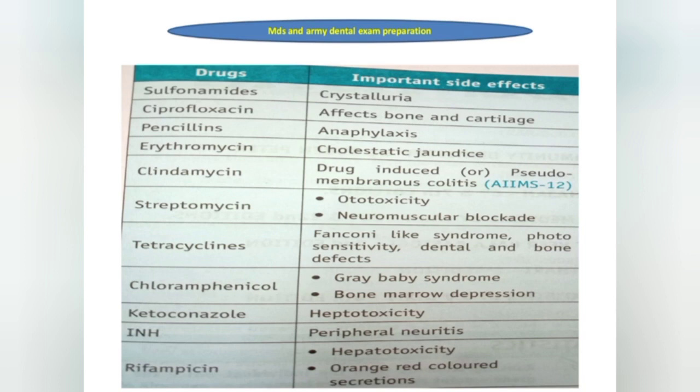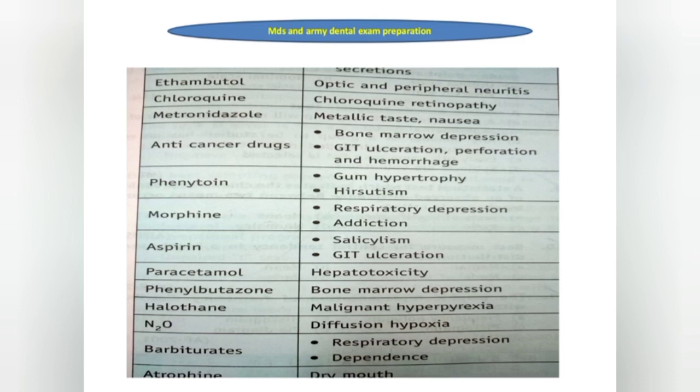Important drug side effects: Sulfonamides — crystalluria. Ciprofloxacin — effects on bone and cartilage. Penicillin — anaphylaxis. Erythromycin — cholestatic jaundice. Clindamycin — pseudomembranous colitis. Streptomycin — ototoxicity. Tetracycline — Fanconi-like syndrome, photosensitivity, and dental and bone defects. Chloramphenicol — gray baby syndrome or bone marrow depression. Ketoconazole — hepatotoxicity. Isoniazid — peripheral neuritis. Rifampicin — hepatotoxicity, orange-red colored secretions. Ethambutol — optic and peripheral neuritis. Chloroquine — retinopathy. Metronidazole — metallic taste and nausea.